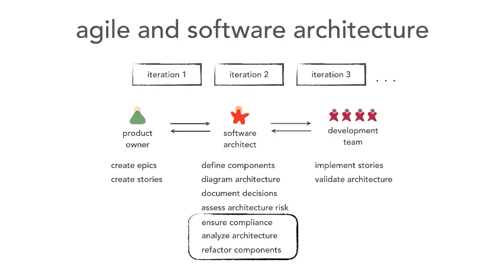Here's the amazing thing: the development team is responsible for implementing stories, but in my view — in Agile especially — that development team on every iteration is really validating my architecture. They're validating my architecture decisions, validating my decision for a particular architecture pattern. This collaboration is necessary in an Agile environment as a software architect to be able to do all of these tasks and roles.